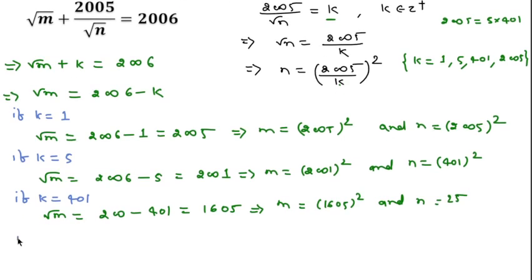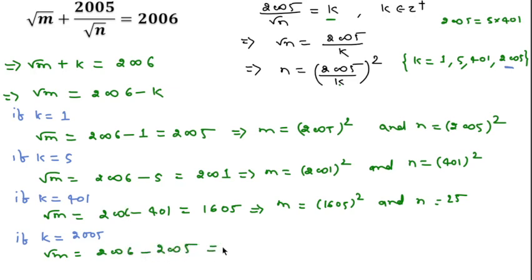If k equal to 2005, then square root of m equal to 2006 minus 2005, which is equal to 1. If we square both sides then we get m equal to 1. And putting k equal to 2005 we also get n equal to 1. So these are all the possible pairs (m, n) for this question.